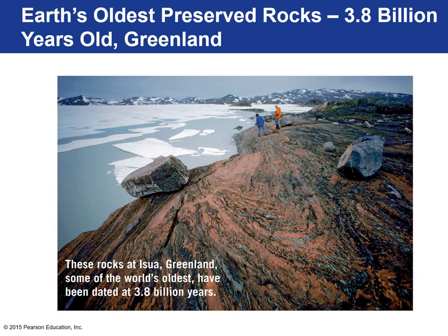These crustal provinces — a lot of them still exist today. If you go to Isua, Greenland, these are some of the oldest rocks on Earth, 3.8 billion years old. They look pretty weathered and messed up — these are metamorphic rocks that have been through a lot.